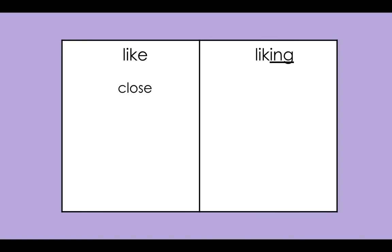Now on the other side we're gonna practice dropping the E when we're adding an ending that begins with a vowel. The next word you're gonna write is "closing." Which side of the chart does "closing" belong? You're right — "closing" belongs on this side, under "liking." Write the word "closing." Say it slow and smooth to hear all the sounds. Check it — did you get it? When you add an ending that begins with a vowel, such as the I in "-ing," you drop the E to make it look like it would in a book. Closing.